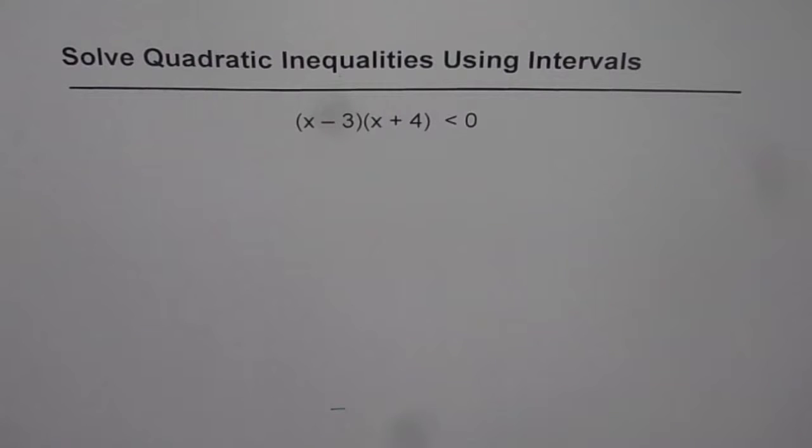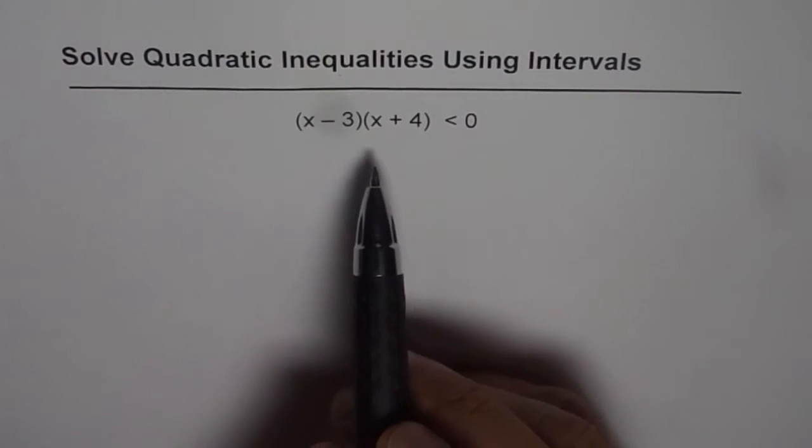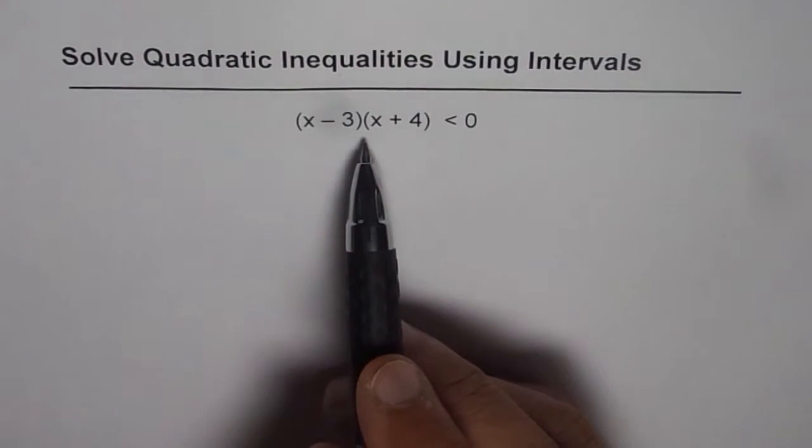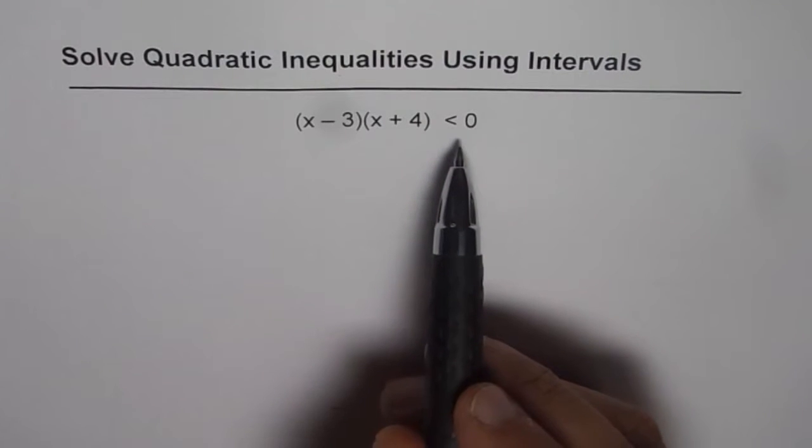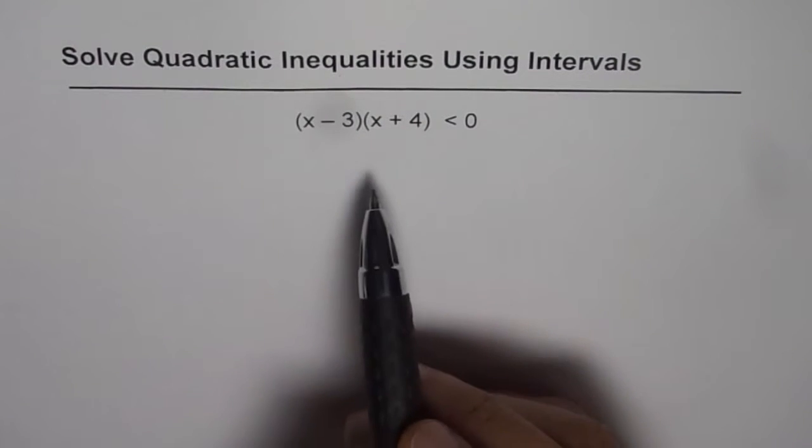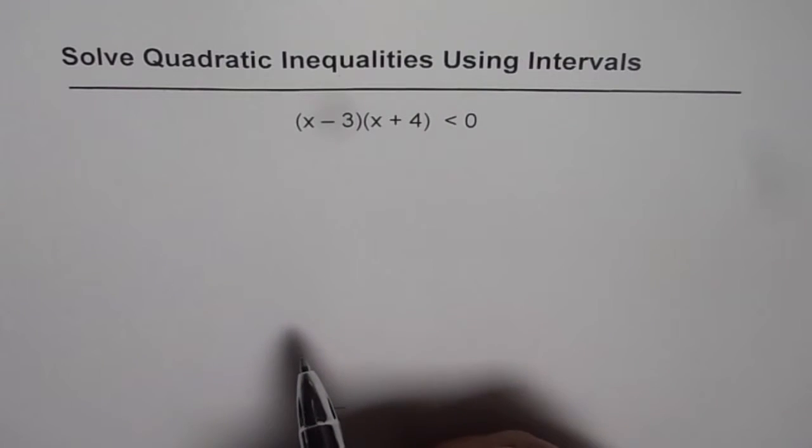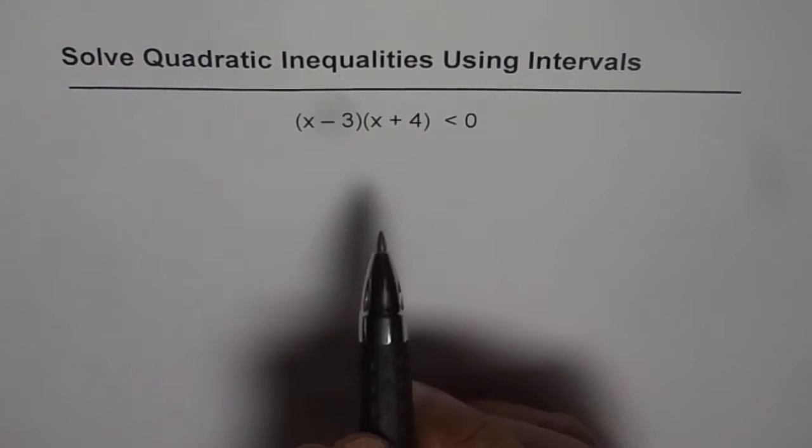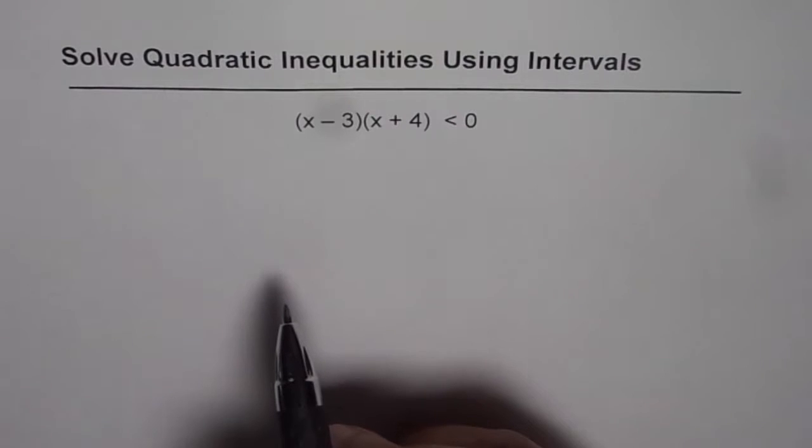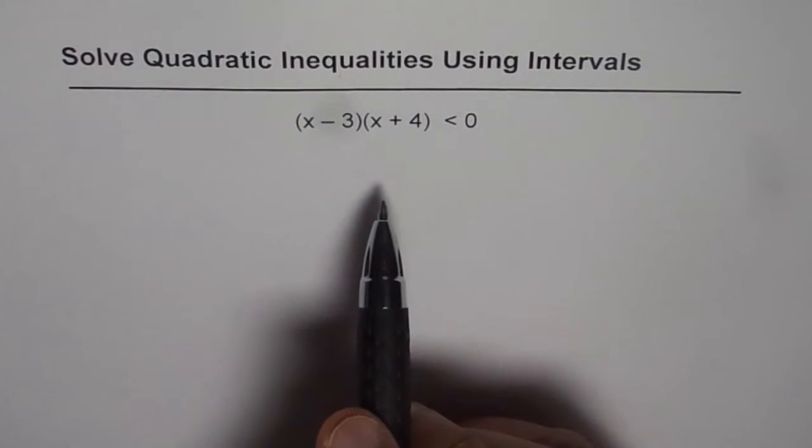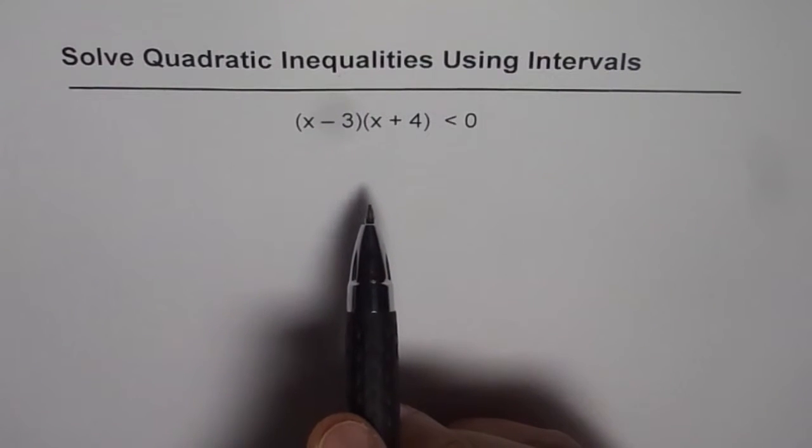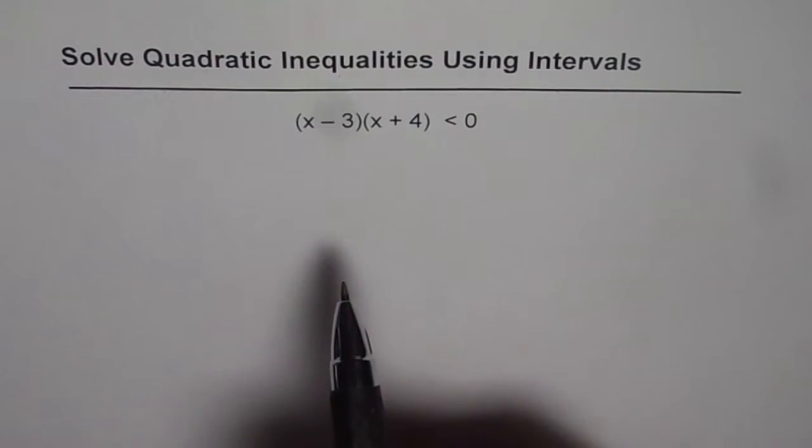Now quadratic equation is basically a degree 2 polynomial. In this particular case we have two factors x minus 3 times x plus 4 less than 0. So that becomes an inequality. If we have less than or greater than sign then it becomes an inequality. As you know in an inequality we expect a solution which could be a region or an interval. So in this case we will figure out what interval is basically the solution for the given inequality.